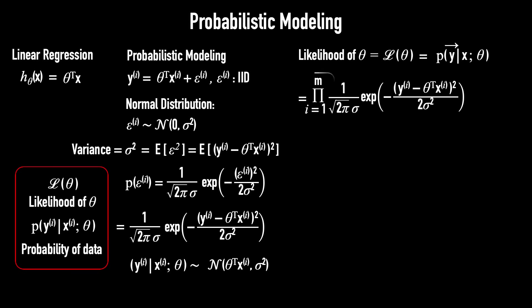So, the likelihood is now a product with m factors, and each factor is an exponential term. To simplify, we work with the log of the likelihood instead of the likelihood itself.